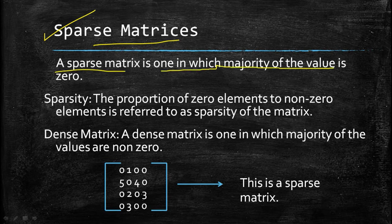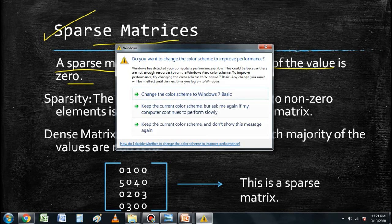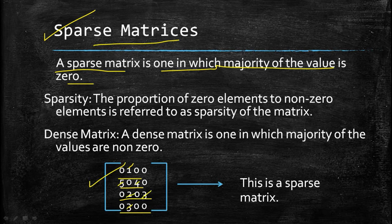A sparse matrix is one in which the majority of the values are zero. If a matrix contains 16 values, then the number of zero values should be greater than 8 for it to be called a sparse matrix. For example, here I have 16 elements, out of which only six are non-zero and ten are zero elements. So the majority of the values are zero — those matrices are known as sparse matrices.